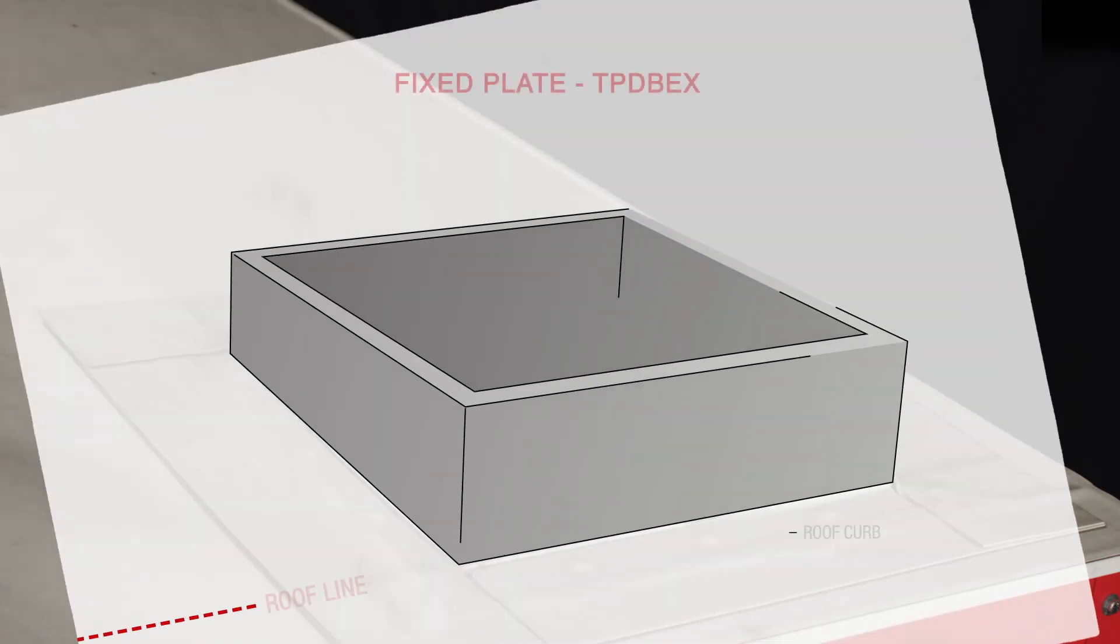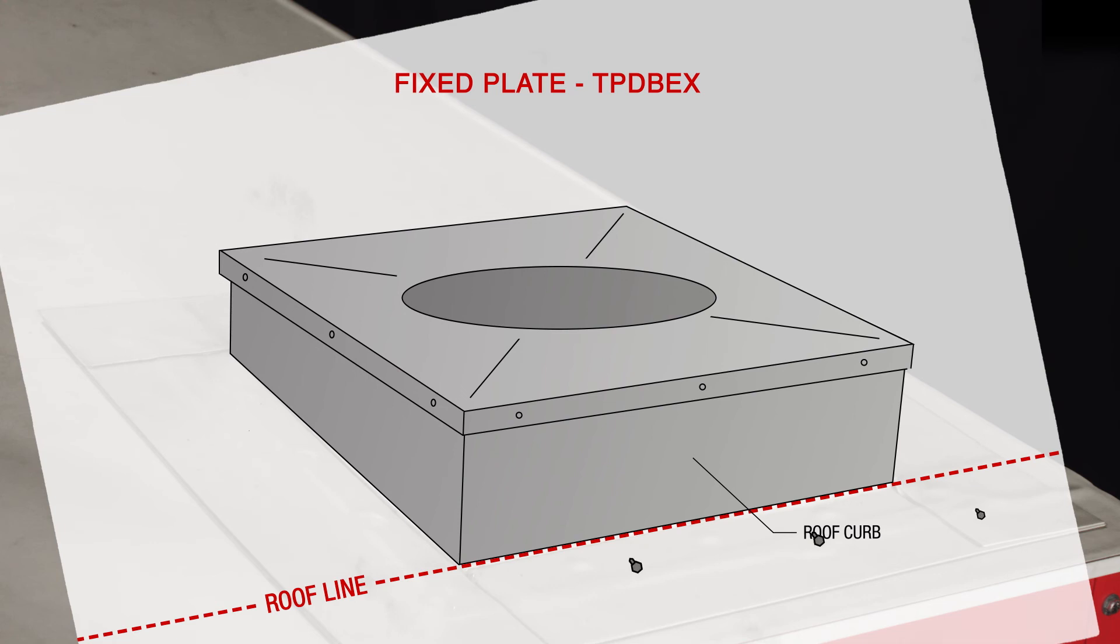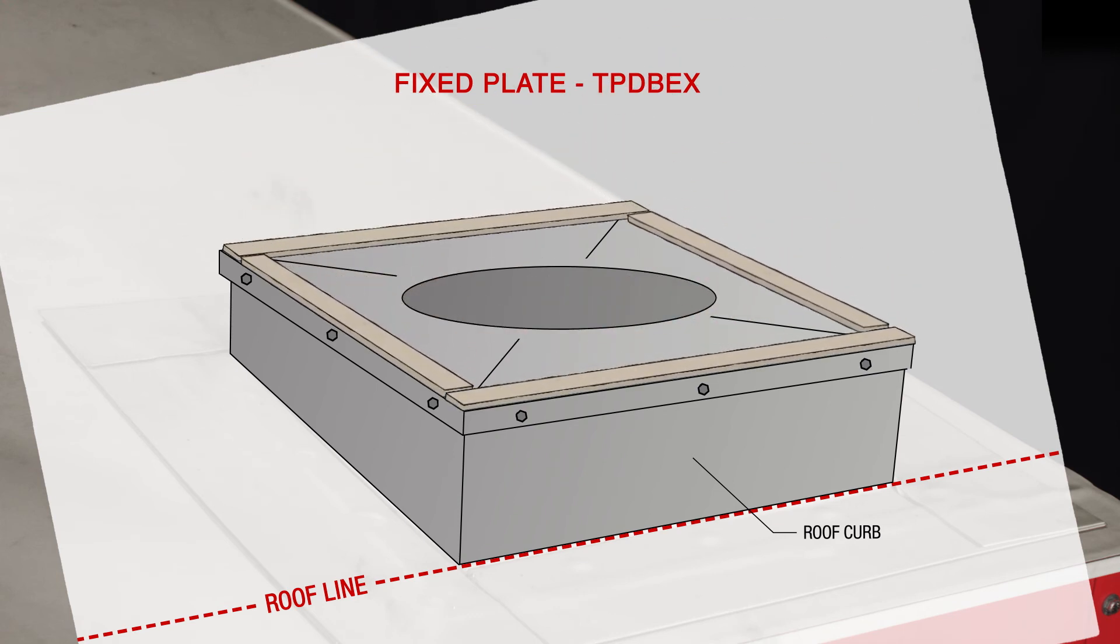To install a fixed TP DB EX plate, first place it on the curb. You can then secure the plate to the sides of the curb using three self-drilling fasteners per side. Lastly, add gasket material to the edges of the plate as shown.